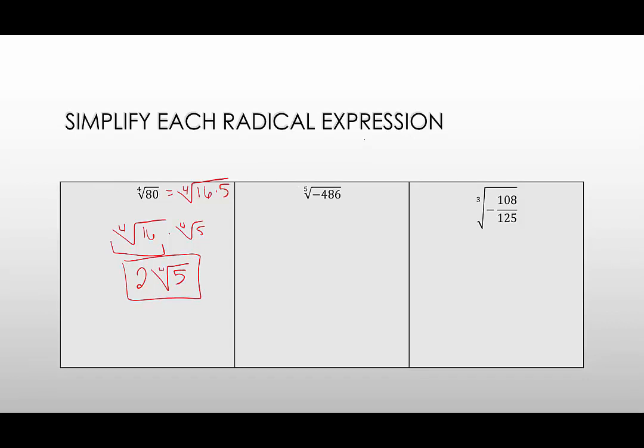In our next example, we have the fifth root of negative 486. Again, it's okay that there's a negative under the radical. It will still be a real number. We have to think about our perfect powers of 5. 243 is a perfect power of 5, and it does go into 486. So we can rewrite this as the fifth root of negative 243 times 2. The fifth root of negative 243 is negative 3. So this becomes negative 3, and then we have the fifth root of 2 remaining.